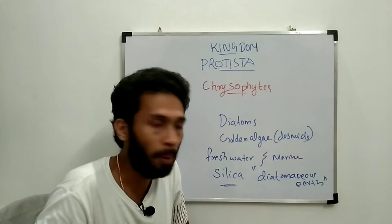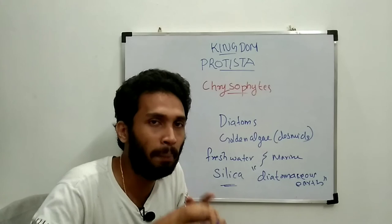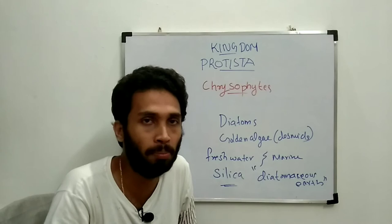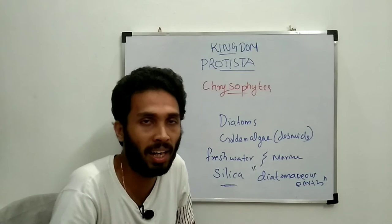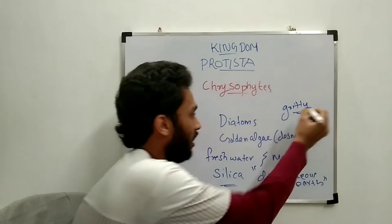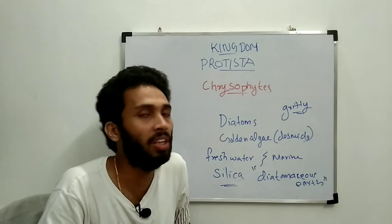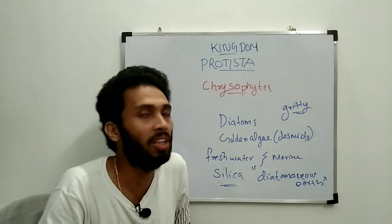These deposits are called diatomaceous earth. This is of economic importance — diatomaceous earth is gritty and is used for polishing. It is also used for filtration of oils and syrups.